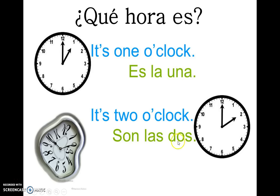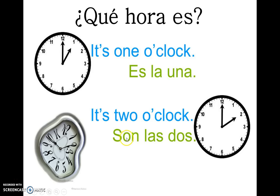But when we get to two, we have to say son las dos horas — son las dos — they are the two hours. The reason why we use 'son' is because 'dos' is plural. So for every number after una, we say son: son las dos, son las tres, son las cuatro, son las cinco, son las seis.